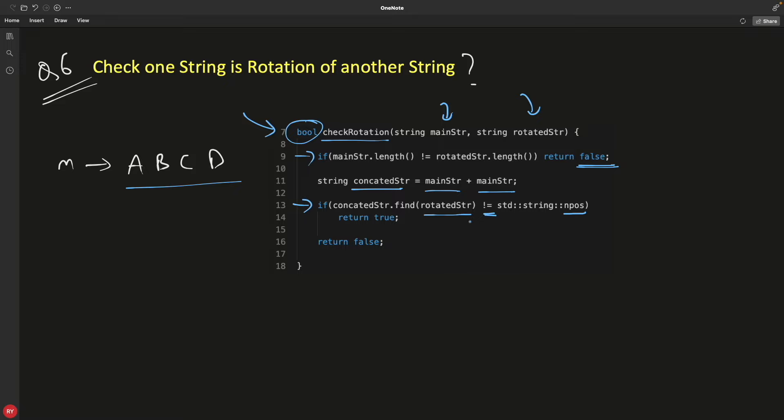Because npos is actually equal to npos. npos is like no position. It did not find the position. Okay. This is some special notifier that you did not found that particular thing what you was looking for. Because this is a standard template function.